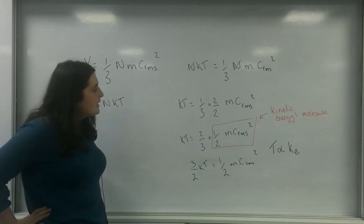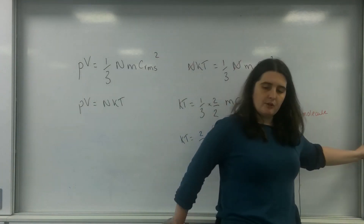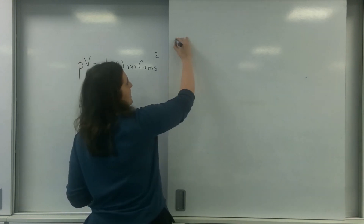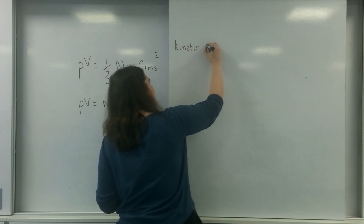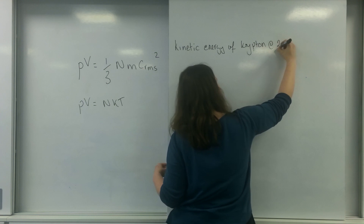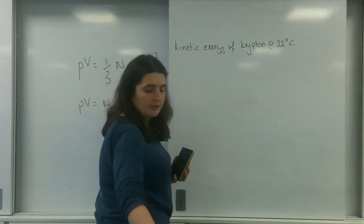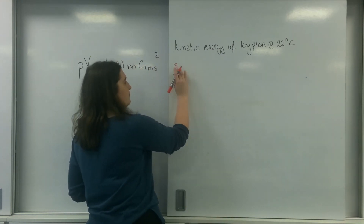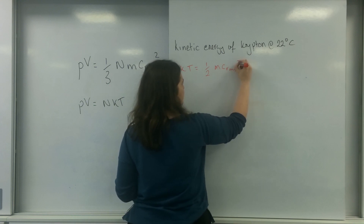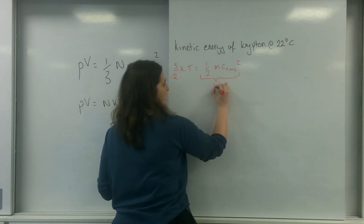It's a bit of a naughty trick, but it's how it works. Now let's do an example question using this formula. Let's say I want to know what is the kinetic energy of krypton at 22 degrees Celsius — I believe this has been an exam question before. So I know that three-halves KT equals one-half MC_RMS squared, and three-halves KT equals the kinetic energy.